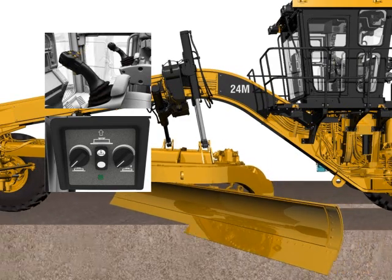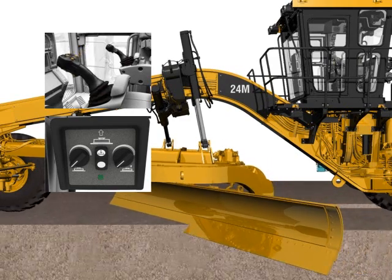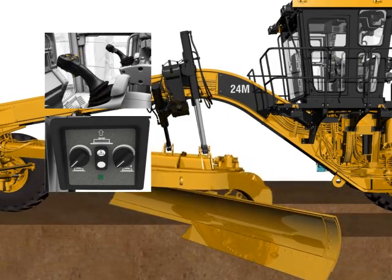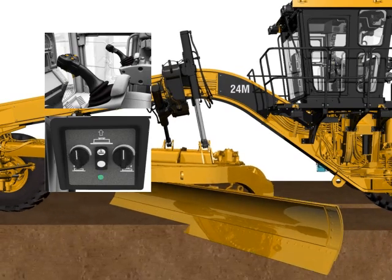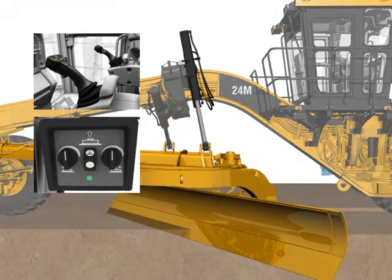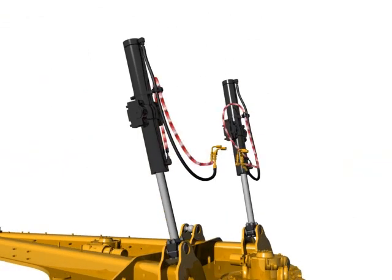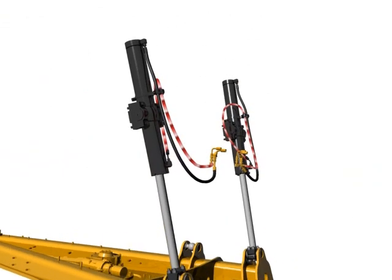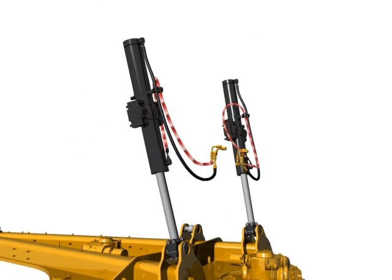By placing the blade into float and activating the variable float feature, the system is engaged and upward pressure to the lift cylinders is created. This hydraulic pressure creates a reduction in weight effect of the moldboard, so that the blade follows the contours of the ground independent of material hardness.